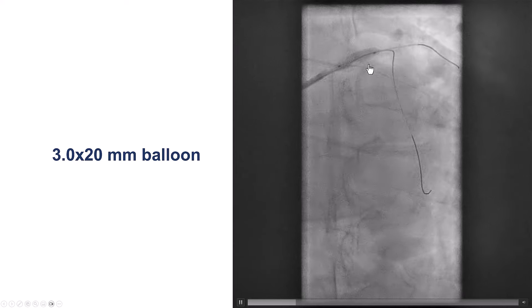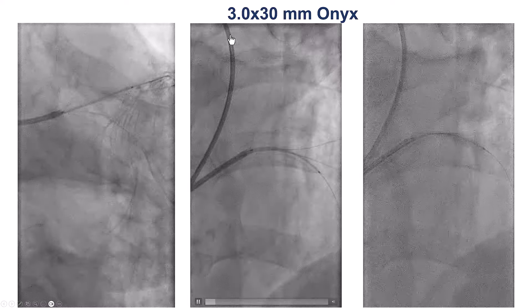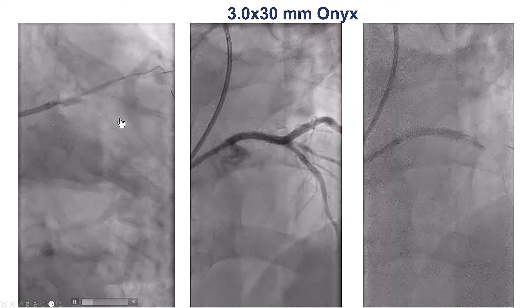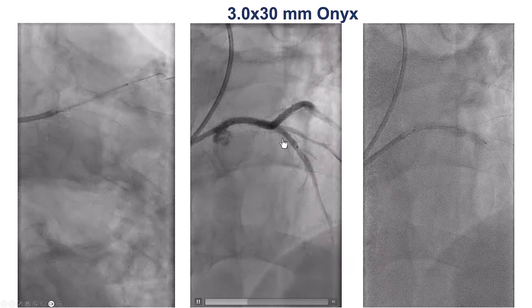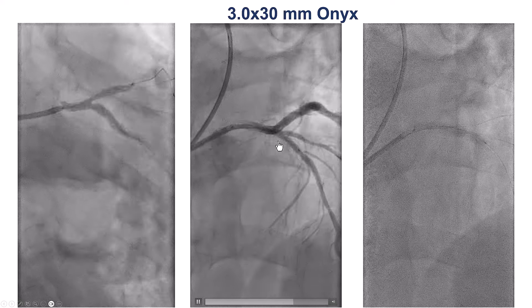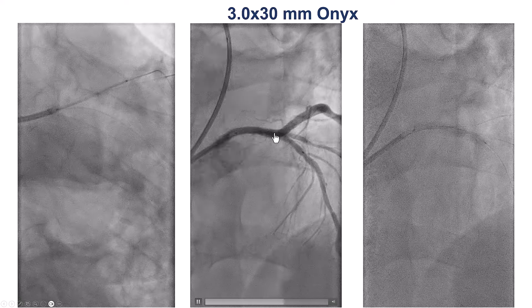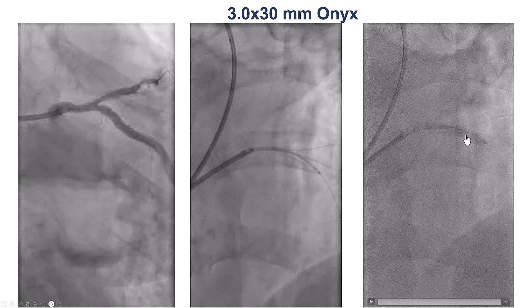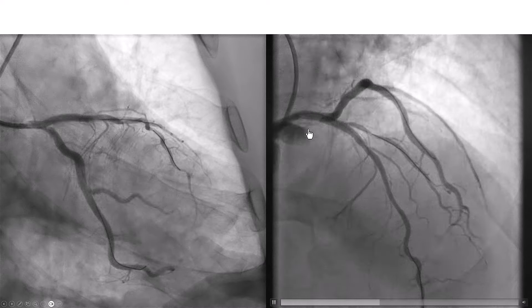We predilated and, as expected, had good expansion. We then deployed a 3.0 by 30-millimeter stent, sized based on the coronary CCTA measurements. We are jailing the diagonal but have a wire to protect it. We are doing provisional stenting for both the diagonal and the circumflex, as there was not significant disease at the ostium of either branch.